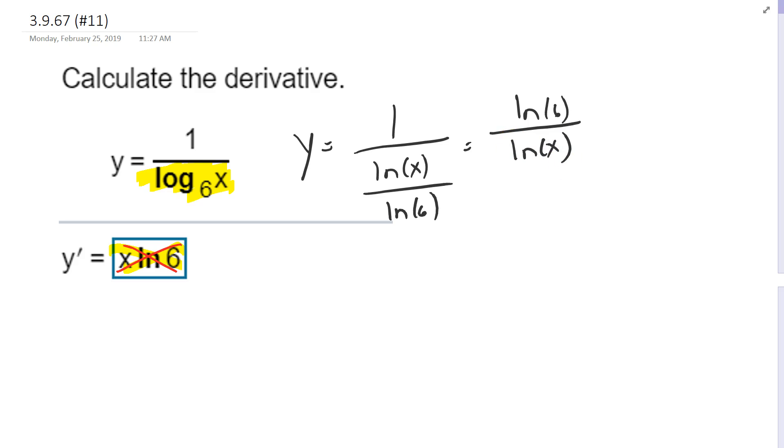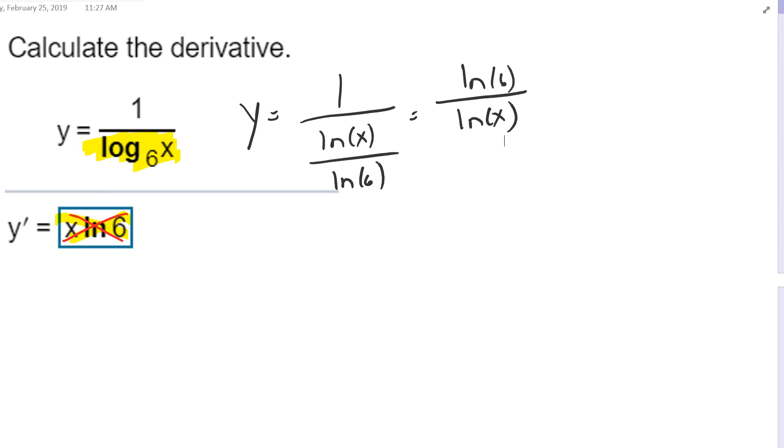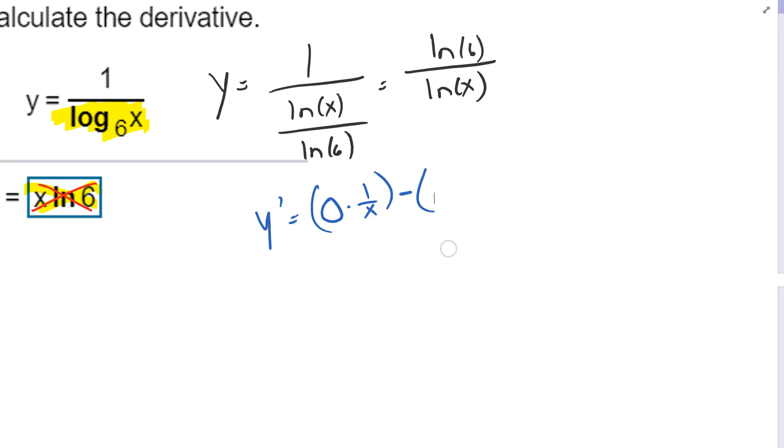Then I could use a few different things I can do here. I could use the quotient rule, and if I want to use the quotient rule, I could take the derivative as the derivative of the top, ln of 6 is a constant, so the derivative of the top is 0. Hold the bottom, which is 0 times the derivative of the bottom, I will go ahead and write that, just because, minus the derivative of the bottom, which is 1 over x, hold the top over the bottom squared.